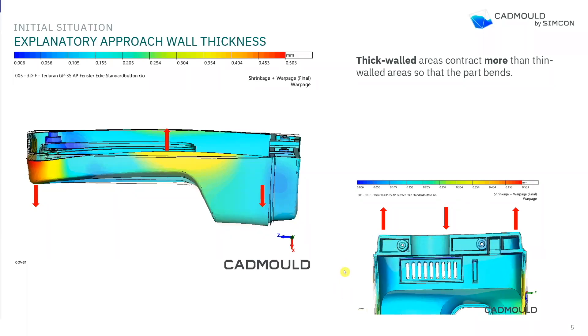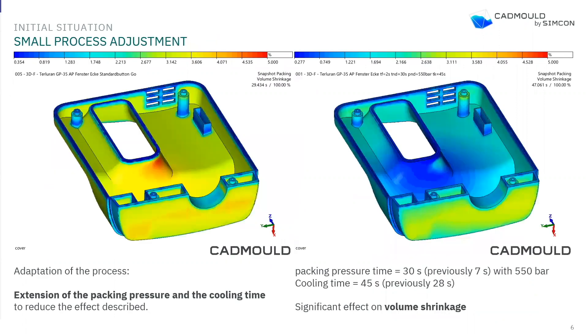With this information, looking at the part movement, this area is thick and shrinks together a lot; the thin area doesn't shrink as much so it pushes in the other direction, creating the bending movement. This area pulls together while this area pushes against it — so the part bends over like this. That's important to understand, and with this information we can think about how to improve the part.